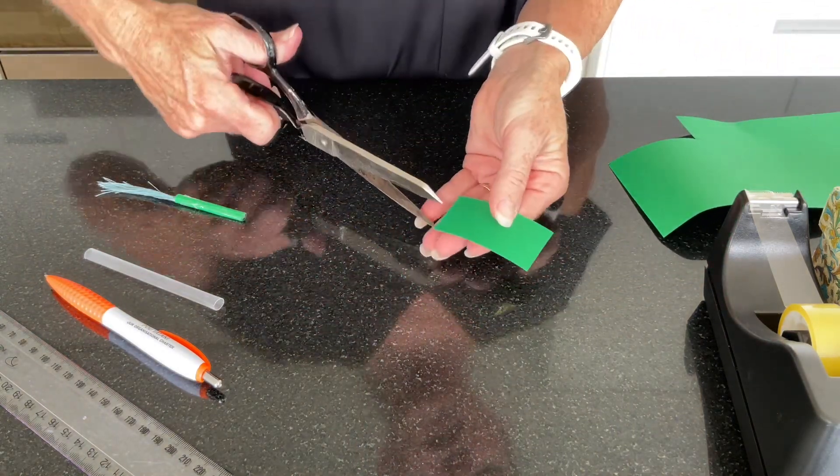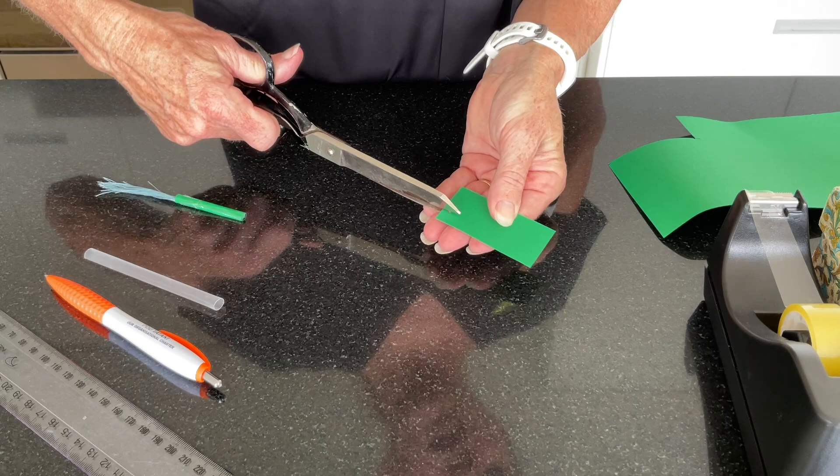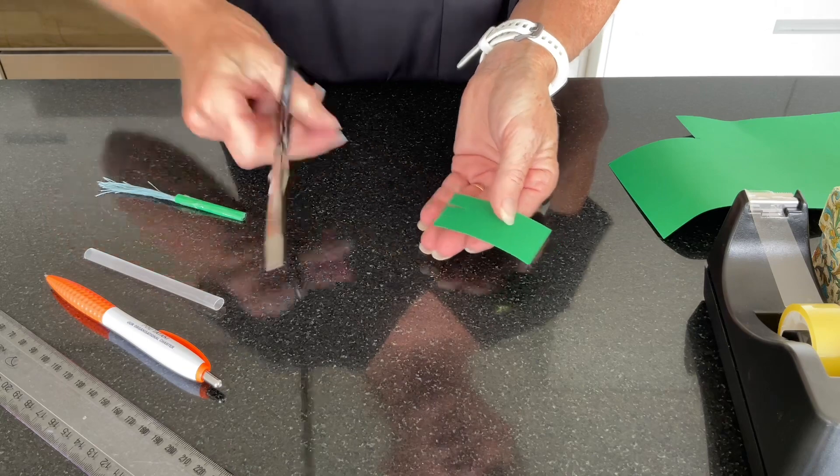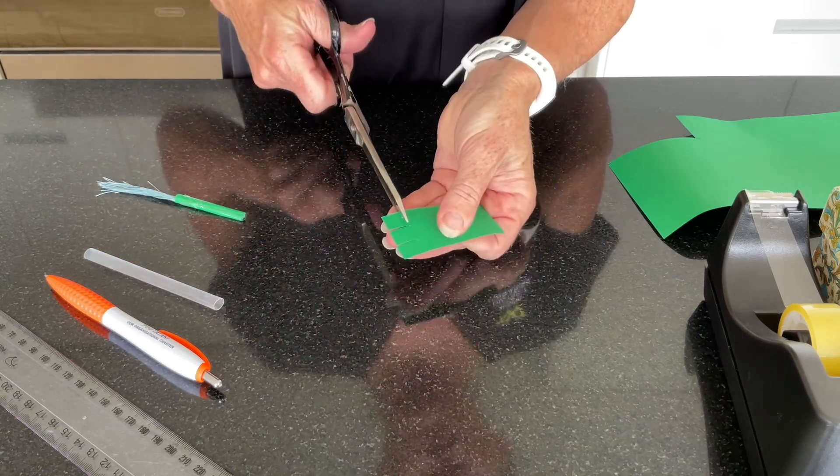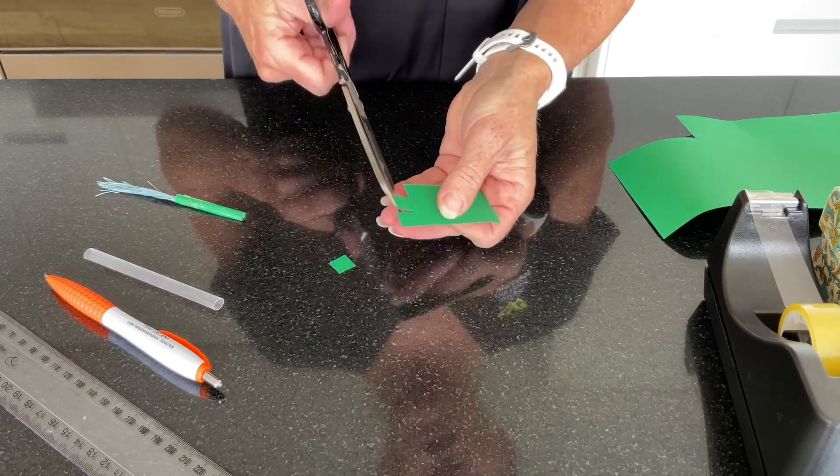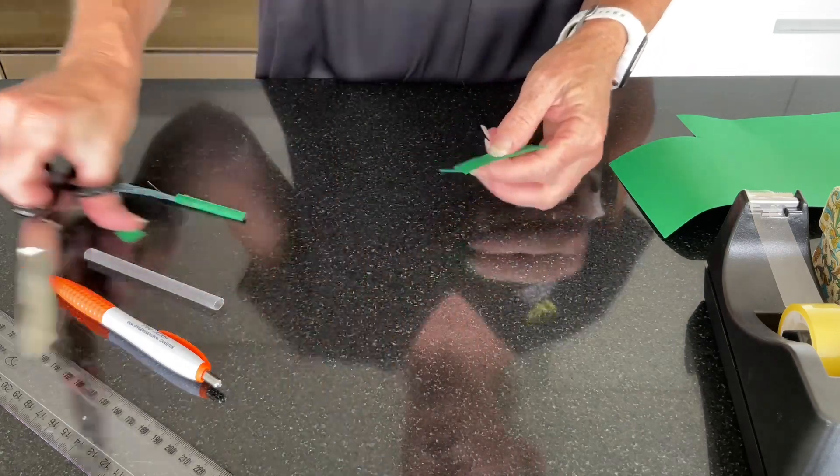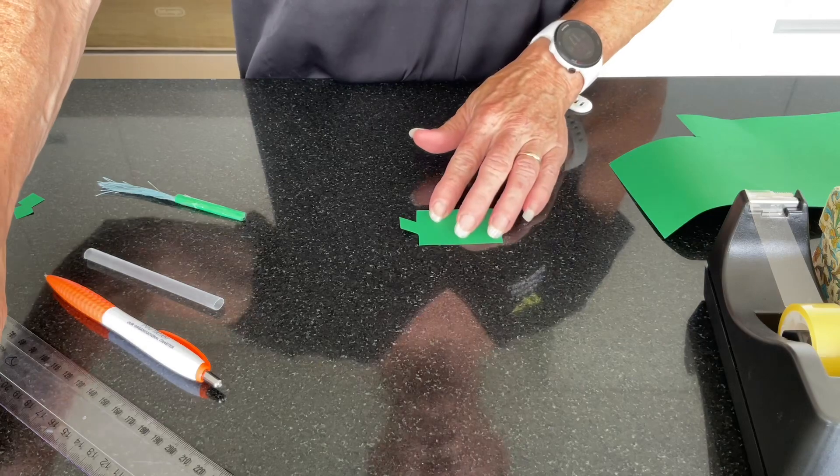Now we're going to create a little bit of a tab on the end. So cut about one centimetre along and just cut those tabs there. You don't need those pieces of paper so you can set them aside.